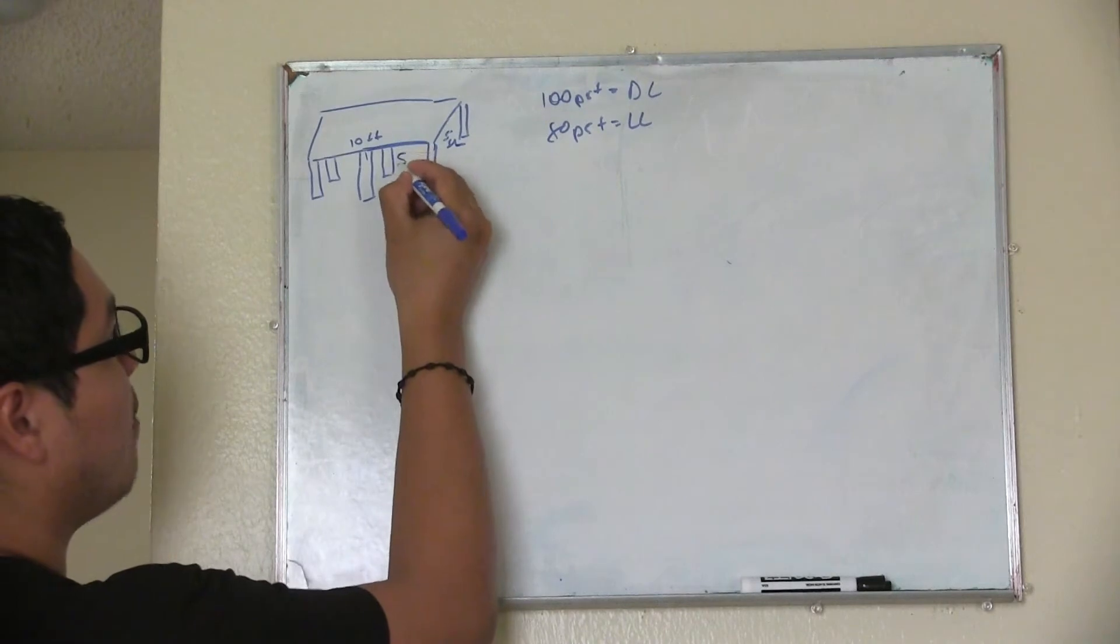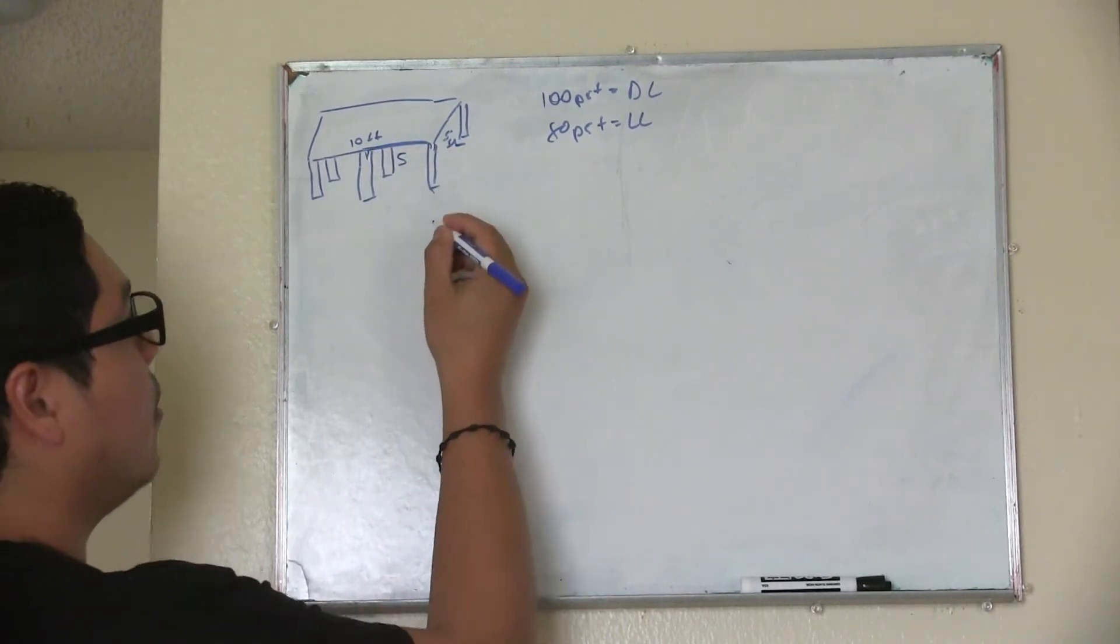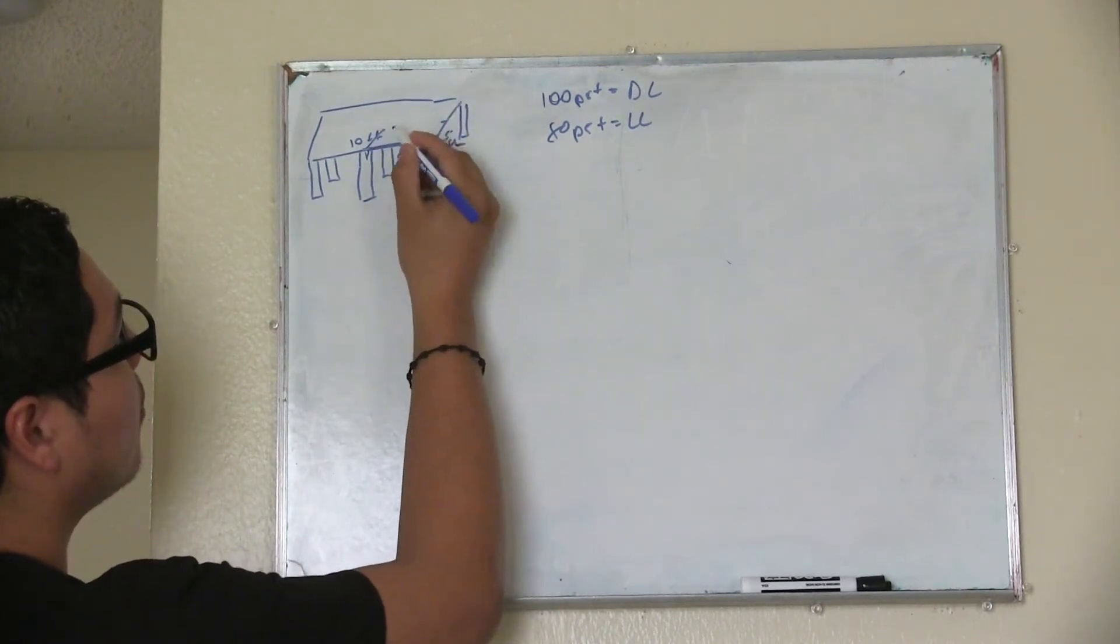For the sake of easiness, let's say that this is 5, the distance from here to here, 5 feet. So what you're going to do is you're going to calculate half of this distance. This is going to be your tributary area.